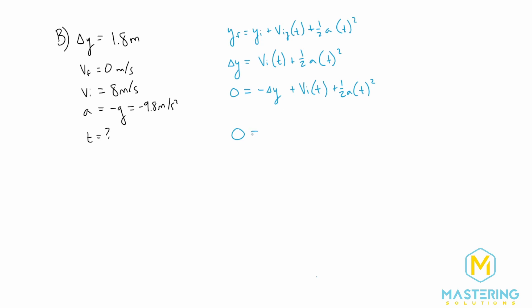We have 0, and I'm going to rearrange it just a little bit. So we have plus one half times negative 9.8 meters per second squared times T squared, plus the initial velocity is 8 meters per second times T, and then we'll minus the delta Y which is a positive 1.8 meters. Okay, so I wrote it this way for a reason because we have 0 equals AX squared in this case, where X is T, plus BX plus C.